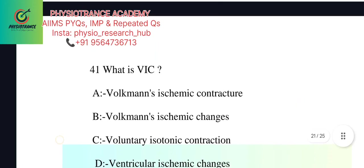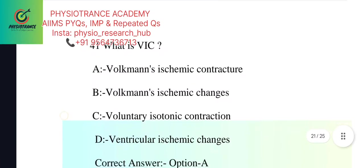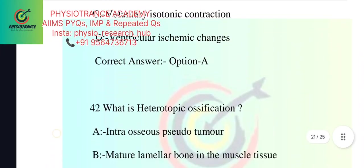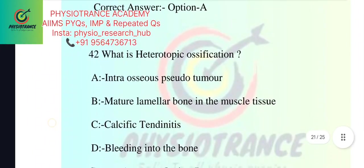The correct answer is A - Volkmann's ischemic contracture. Next question: What is heterotopic ossification?